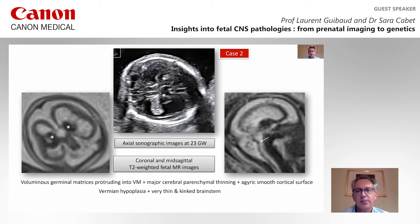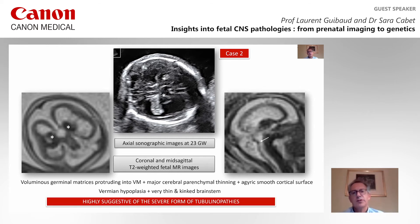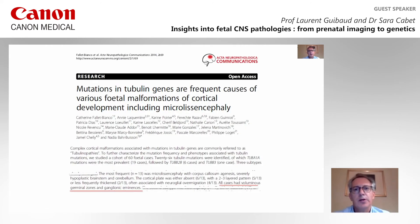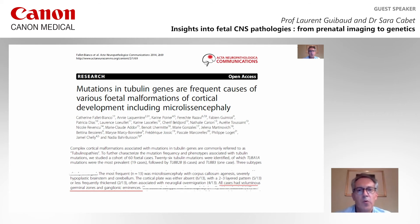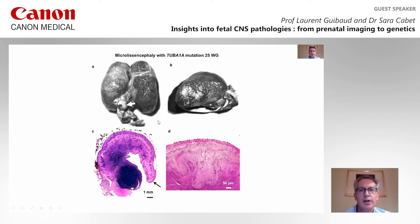This pattern is really suggestive of tubulinopathies. Going back to a 2014 paper about tubulinopathies and microlissencephaly of tubulinopathies, in all cases there is a voluminous germinal zone and ganglionic eminence, which is a very specific finding when you encounter microlissencephaly. This is illustrated in this image where you see the huge germinal matrix zone and the thin parenchyma, which is exactly what we saw in our case.